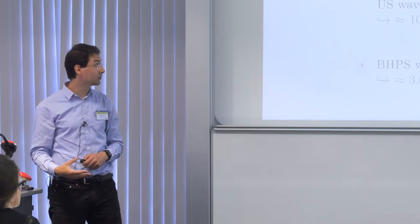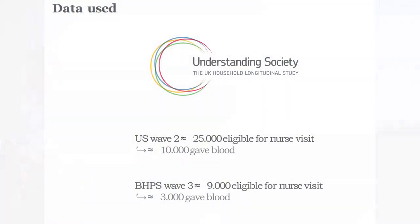The data I'm using comes from Understanding Society. For wave 2, we have around 25,000 people who were eligible for the nurse visit, and out of those around 10,000 gave blood. Our question is what happened to those 15,000 and whether nurses influenced the non-response process. We also look at wave 3 of Understanding Society, which includes the British Household Panel Survey — an older study that started in 1992. There we have 9,000 people eligible and around 3,000 gave blood.